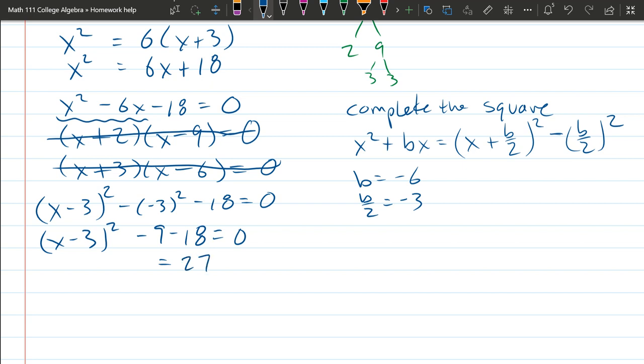Negative 9 minus 18 is negative 27. Add it to the other side as positive 27. And we'll unsquare, take the square root. That gives us plus minus square root 27.